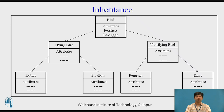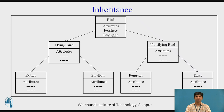In this figure, the bird is the main class in which the attributes are feathers and laying eggs — these are the data members. This hierarchical classification leads into the derived classes, that is flying birds and non-flying birds, which have different attributes. Flying birds are further classified into robin and swallow, and non-flying birds into penguin and kiwi.